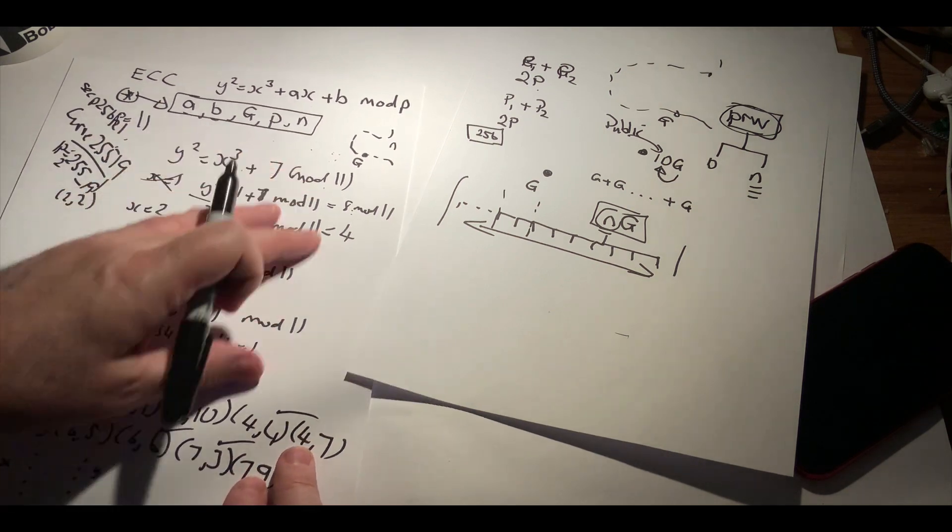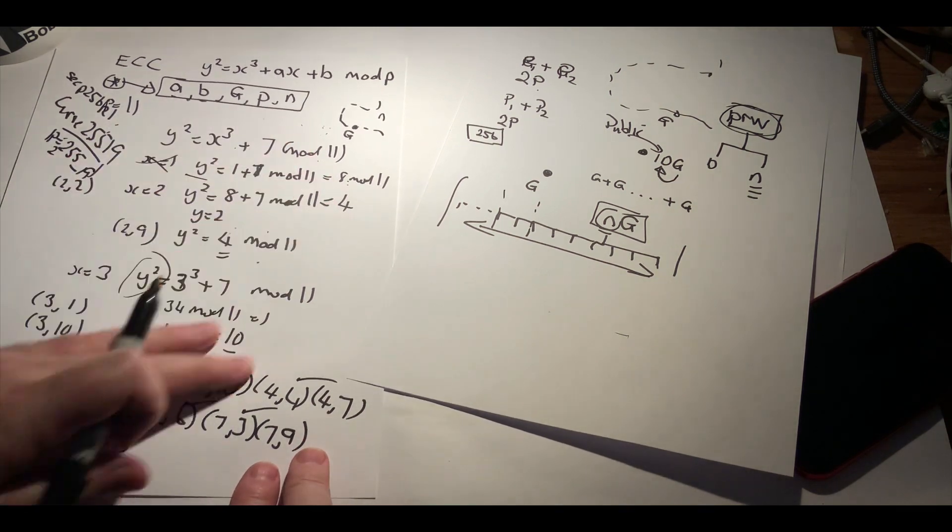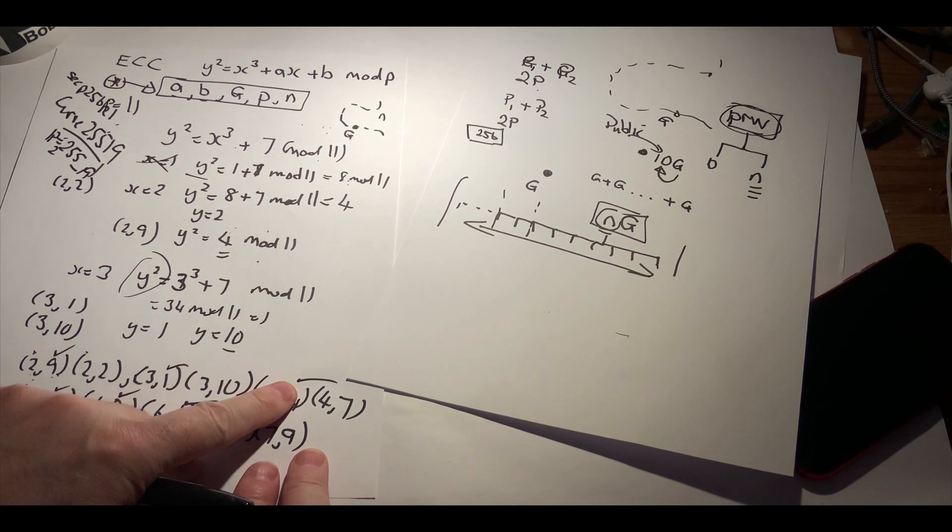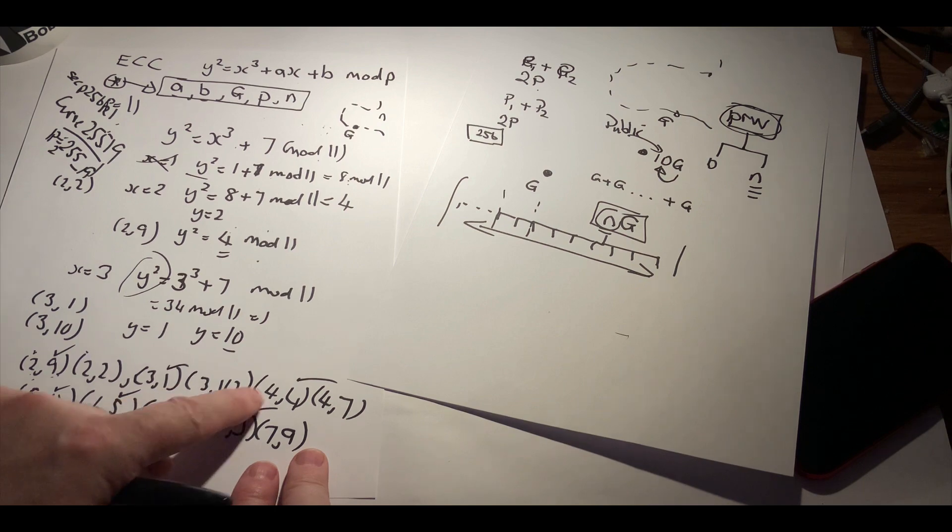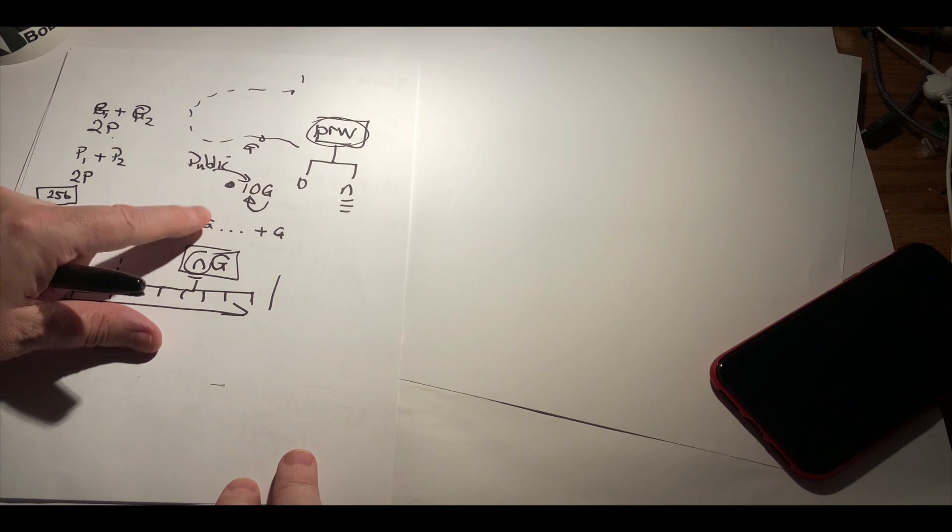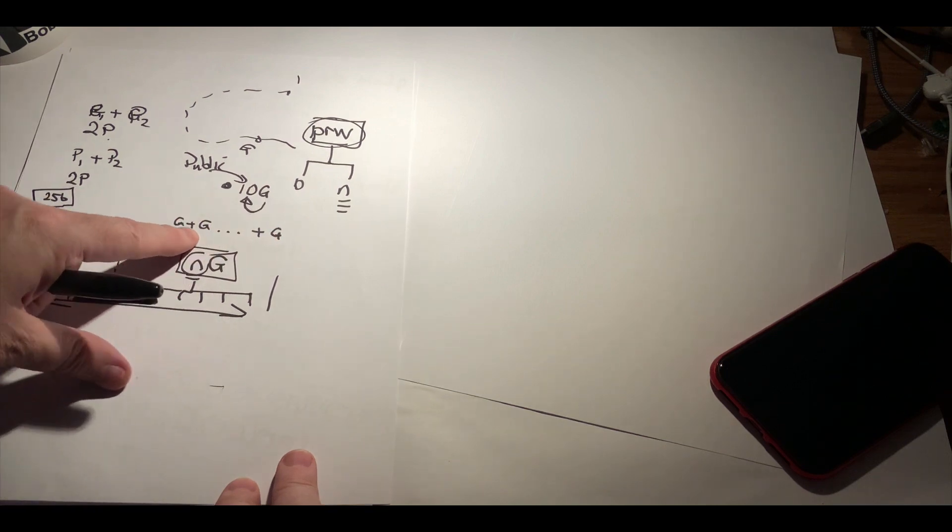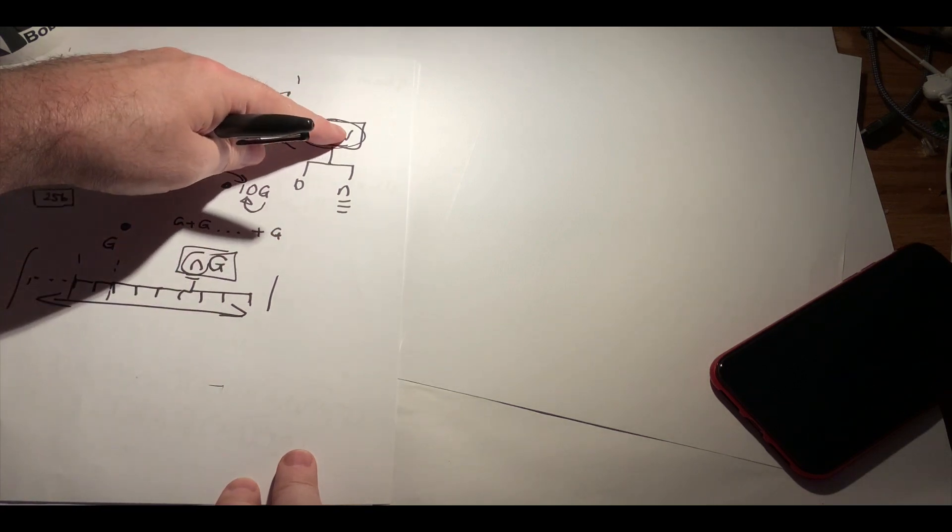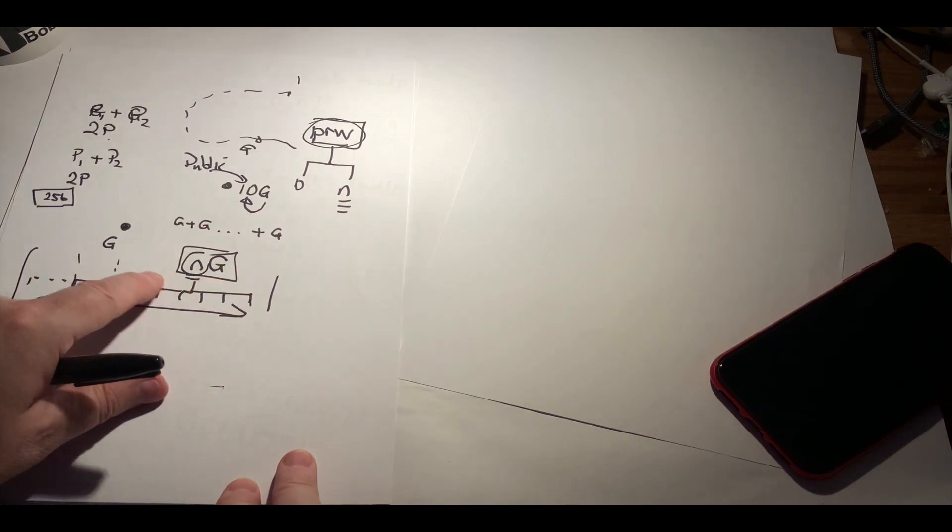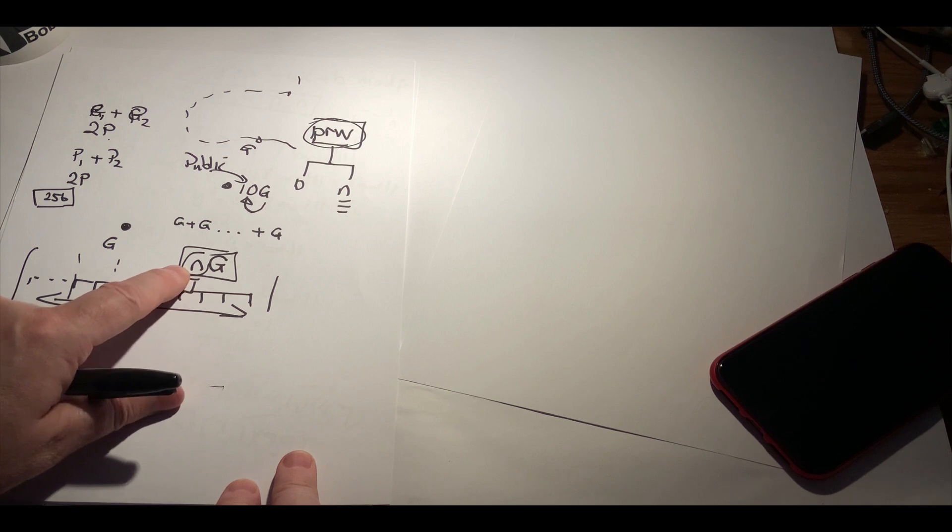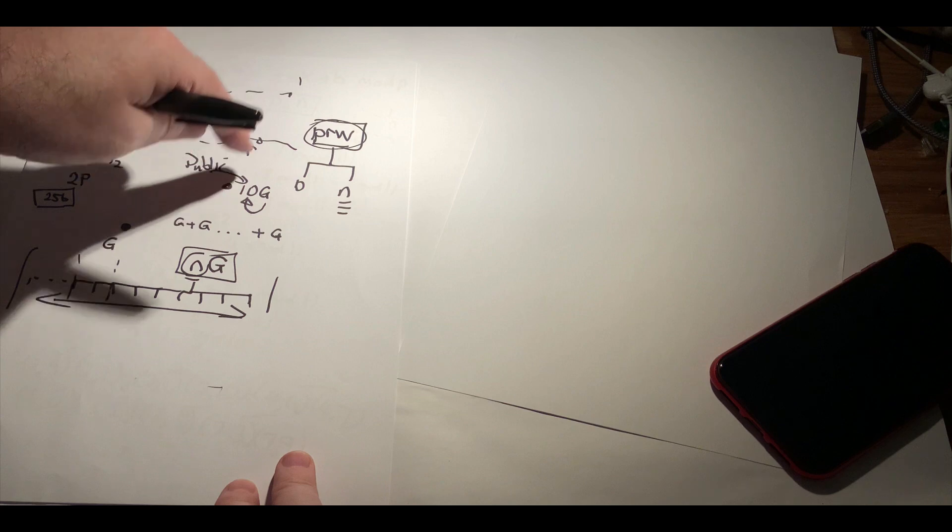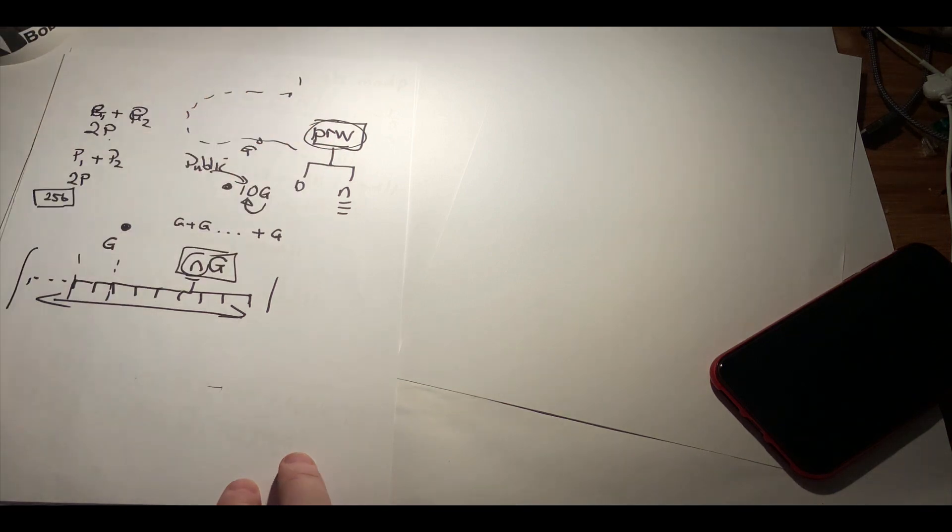So then that curve gives us our layout. We then pick a generator point on the curve, and then we will add that point a given number of times, typically with our private key value, to create our public key. And it's this public key which can be shared, and it's not possible to determine what the private key value is.